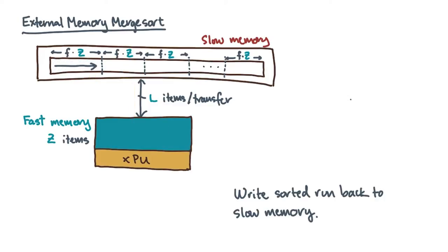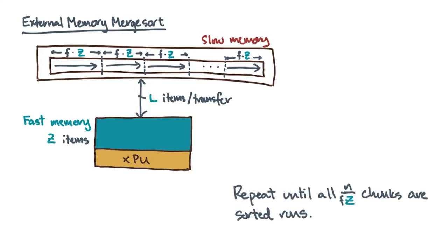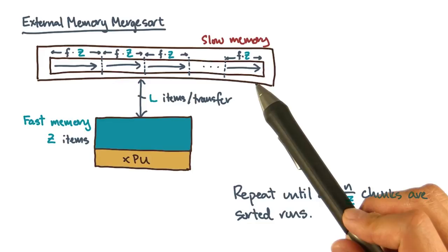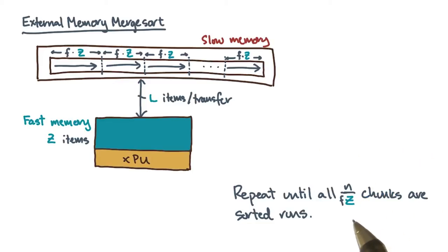You'll repeat this process on each input chunk. Assuming each of the input chunks was of size f times z, where f is some constant less than 1, then you'll end up with about n over f times z sorted runs in total. I'll refer to everything we just did as phase one of the procedure.